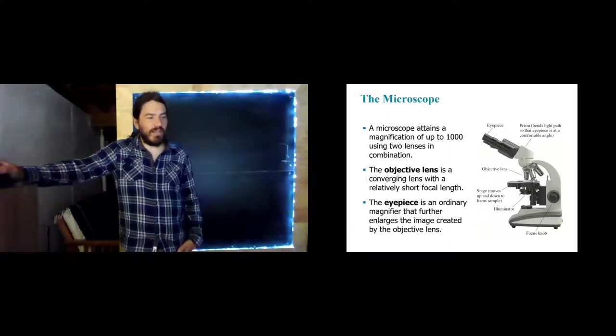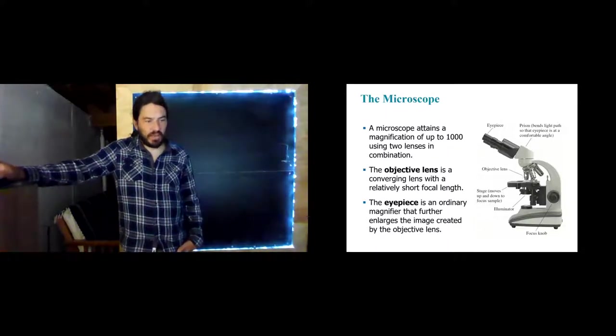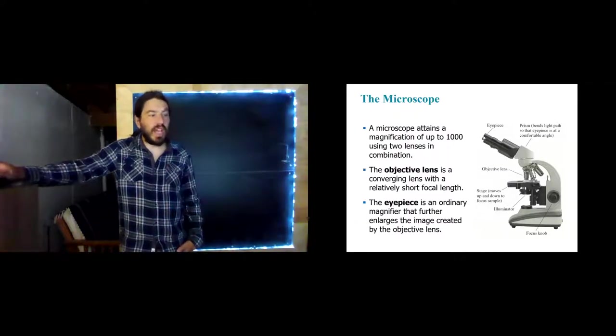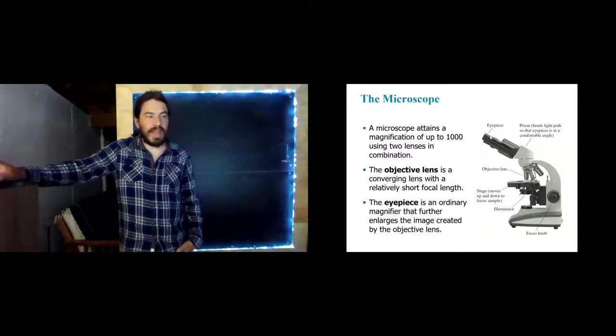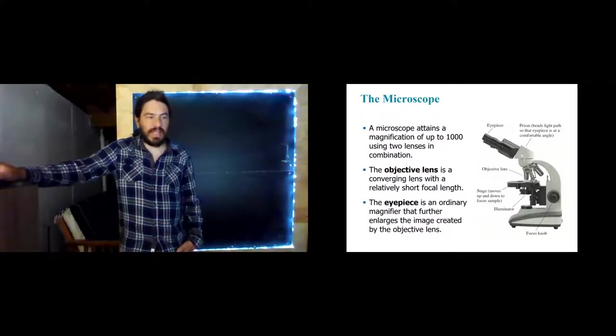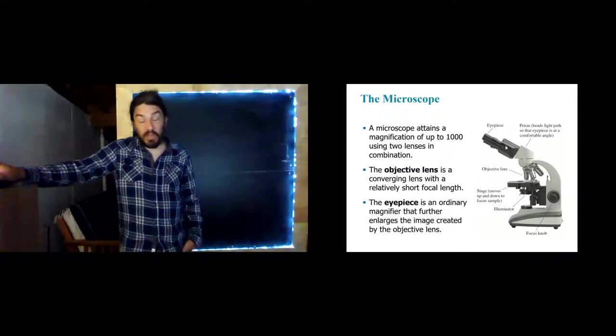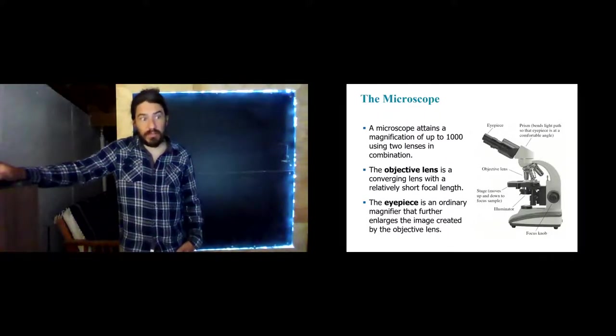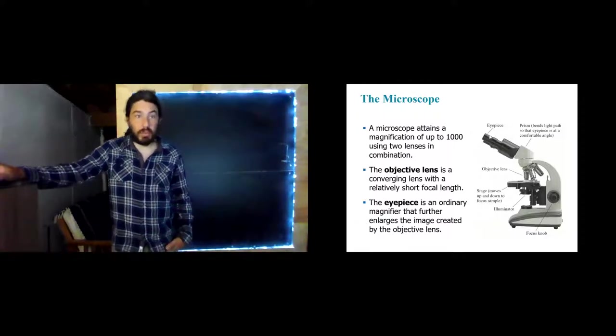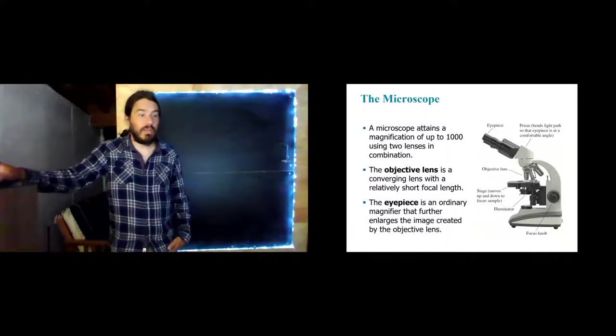So we have two lenses here, we have the objective lens, which is right here. And this particular microscope has three different objective lenses that you can use for three different powers. And then it has an eyepiece, which acts just as an ordinary magnifier. And it's out here. Now there's a prism in here to bend the light, it uses total internal reflection because we get more light out of the eyepiece if we use total internal reflection from a prism than we do from a mirror.